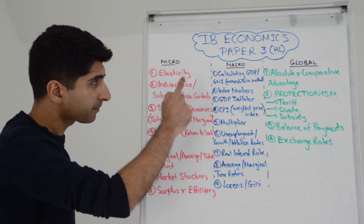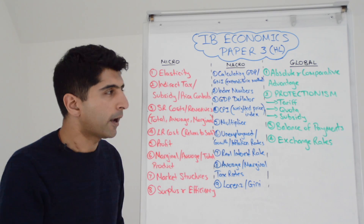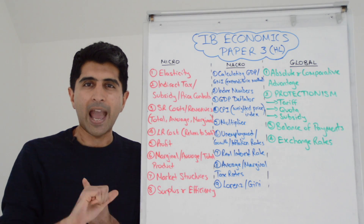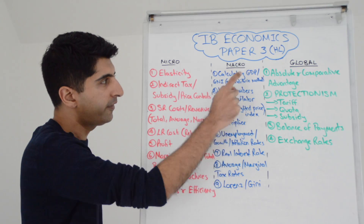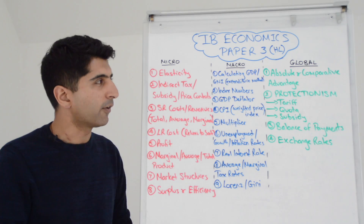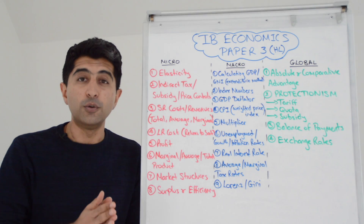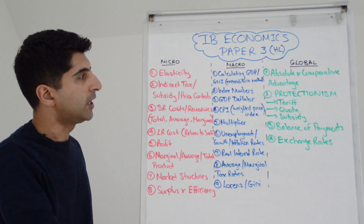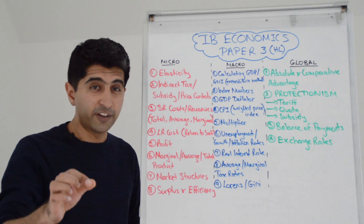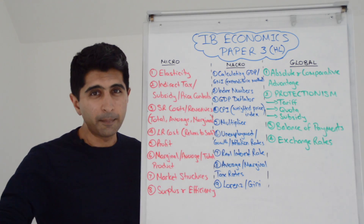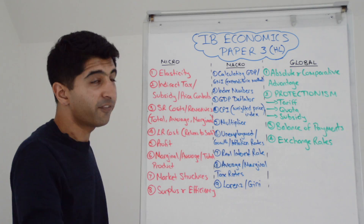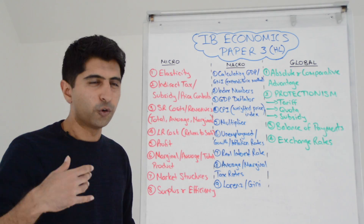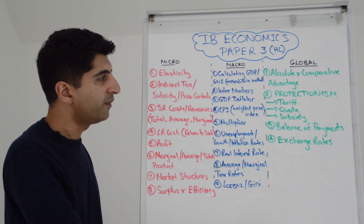What about macro? For macro, being able to calculate GDP — it will always be using the expenditure method; you'll never need to calculate the output or income method. If it's not that, you'll need to use the GDP deflator, rearrange that to calculate either nominal or real GDP. You also need to know the equation for GNI — that can come up. Index numbers — know the equation to work those out. The GDP deflator equation is what you need, and being able to rejig it to work out real GDP or nominal GDP is going to be important.